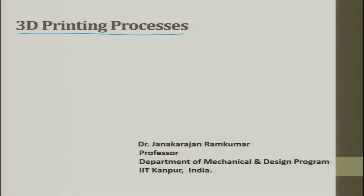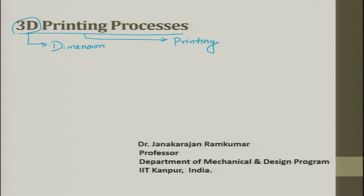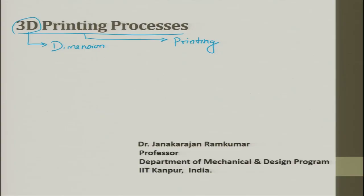Welcome to the next lecture on 3D printing processes. 3D talks about the dimension of the object which we are going to create. We are going to use the technology used in printing. Currently, almost every house has a desktop printer where what we print is 2D laminate information on one sheet of paper. We are going to use that technique to develop three-dimensional objects. That is what is discussed in this process: 3D printing processes.